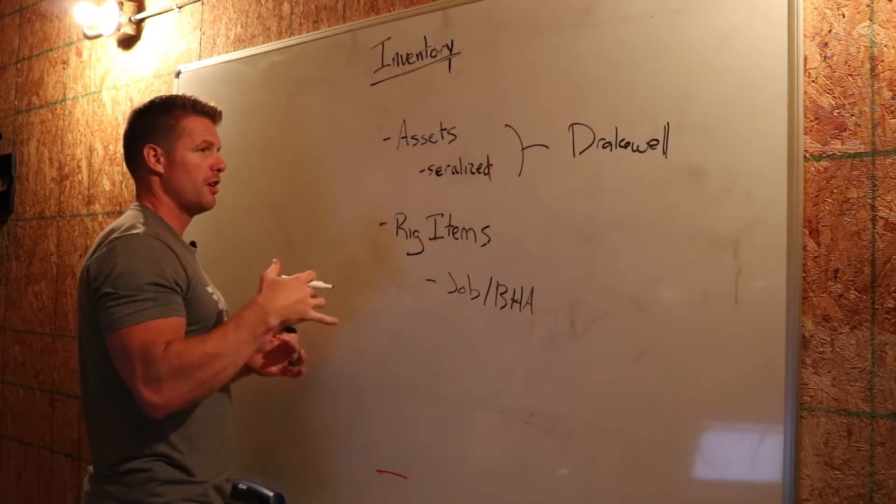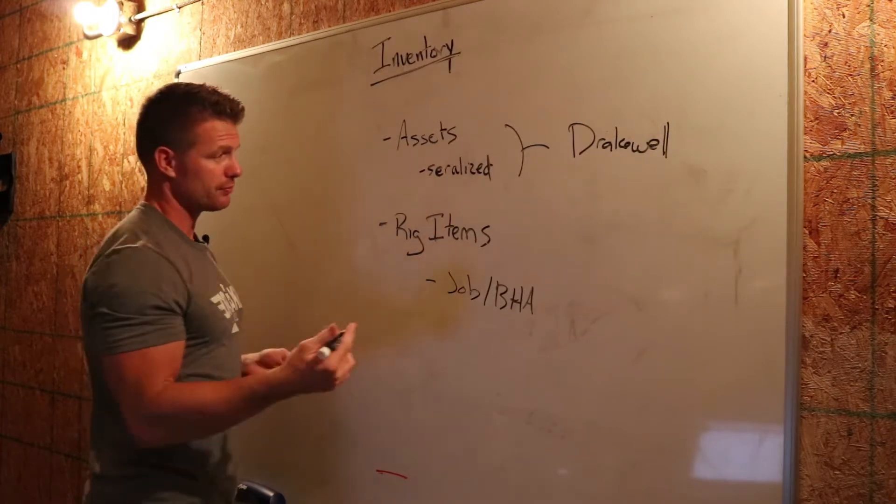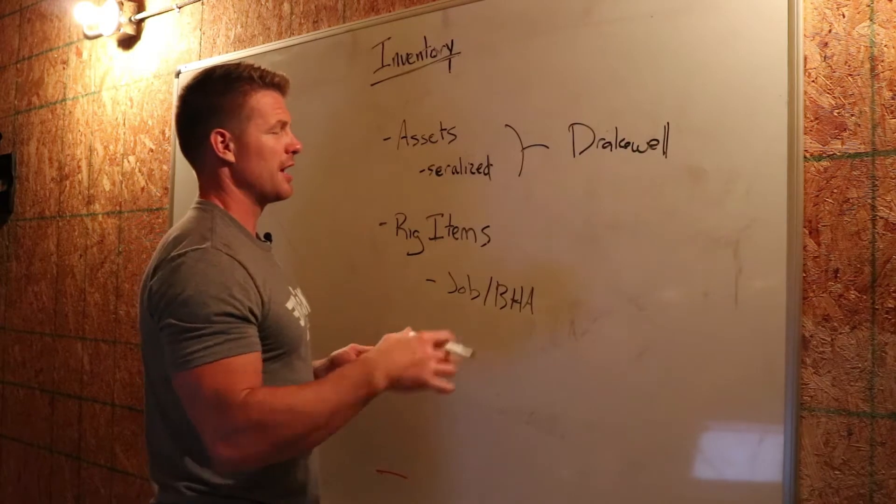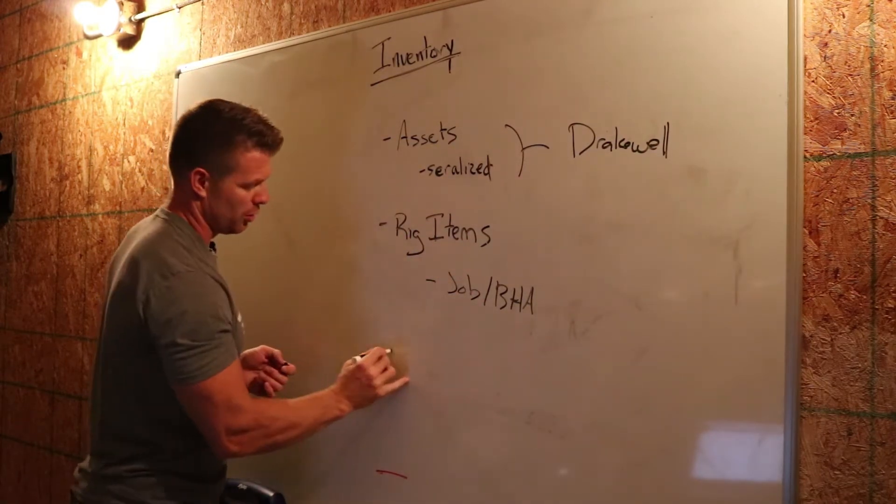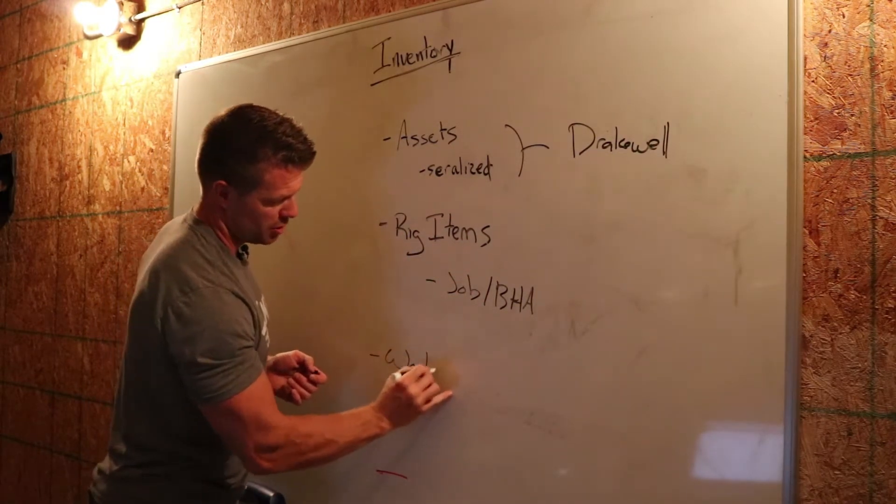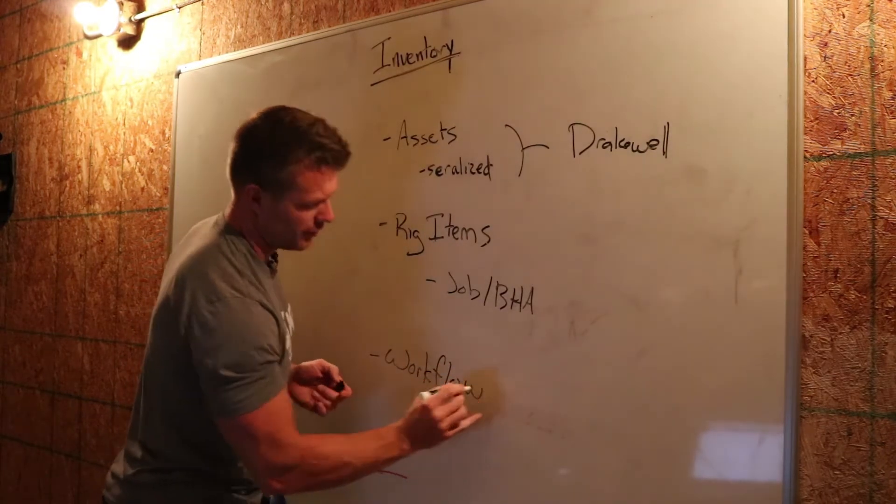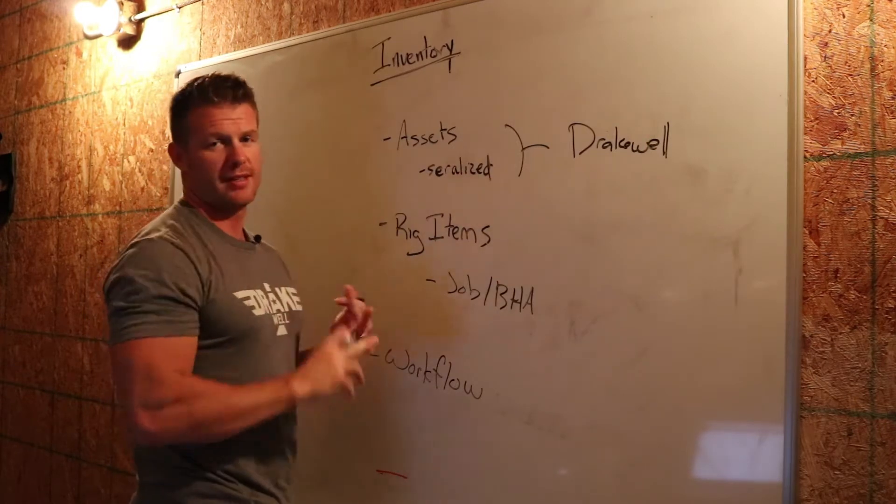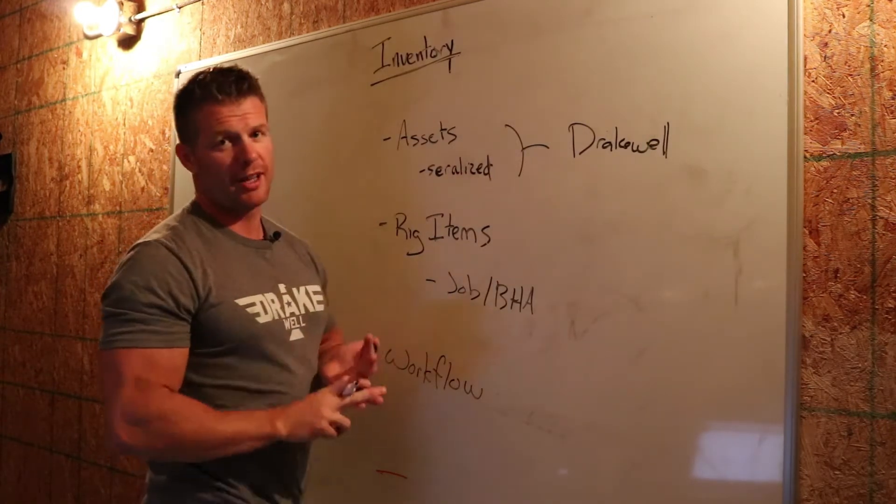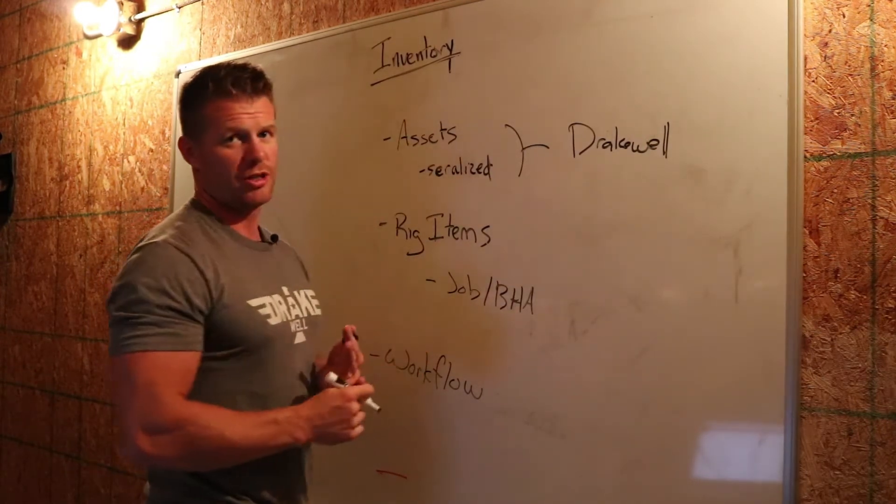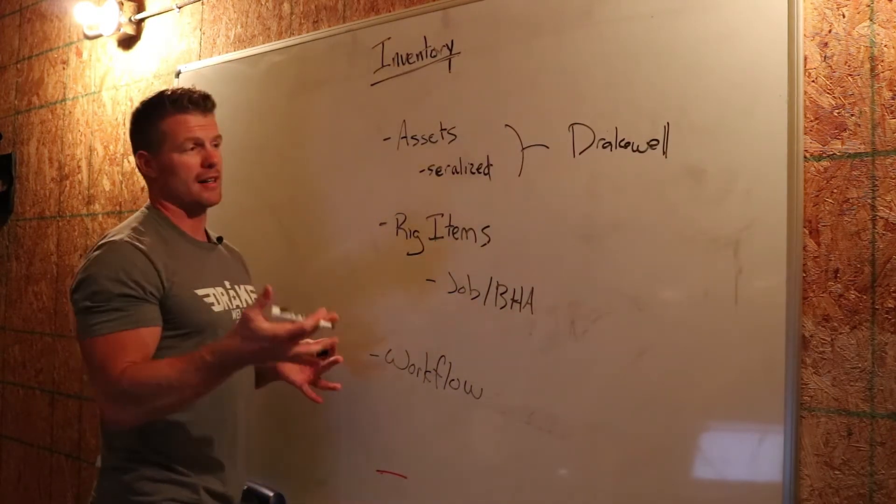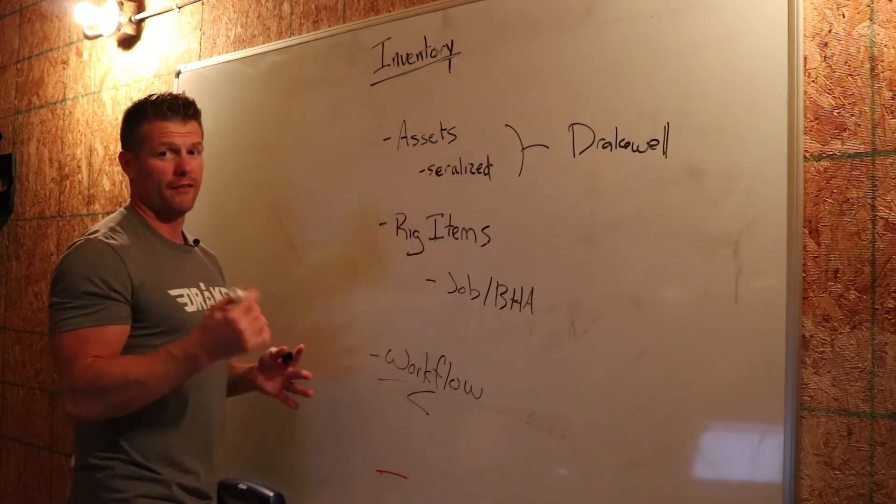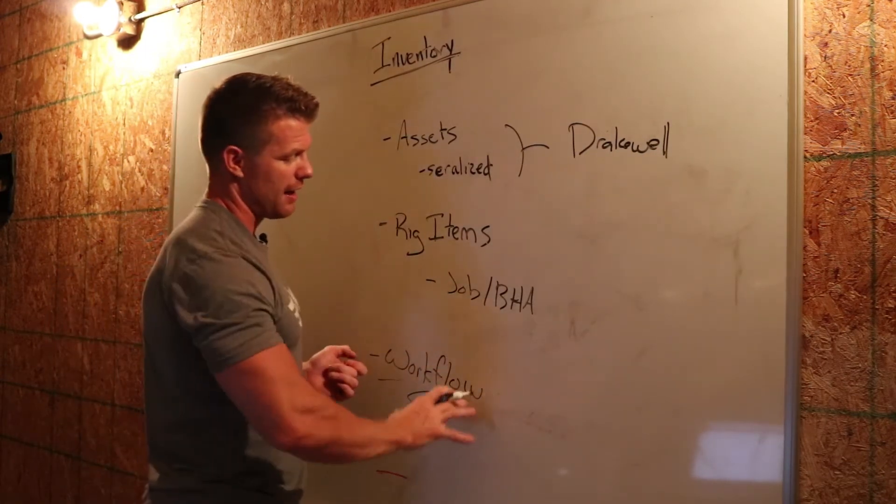And then, so another example maybe is a motor. Now a motor is an assembled thing built up of other components. And so we can actually get into the workflows, which you may be familiar with. And what workflows are is just what happens to the assets. So motors get initialized, they get assembled. When they get shipped to a job, they get strapped. When they come back from a job going down hole, they get disassembled and inspected. That's all part of that workflow process, and that can all be configured as well. But we'll dive into all that at a later date.